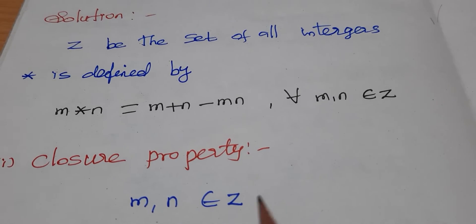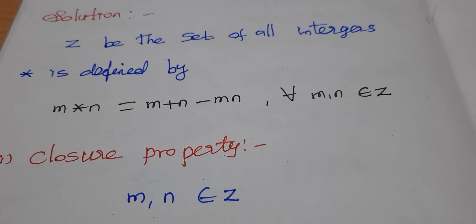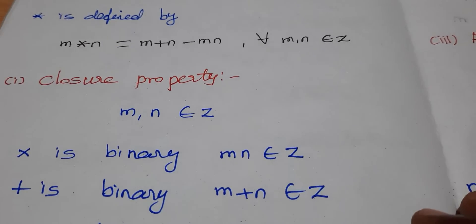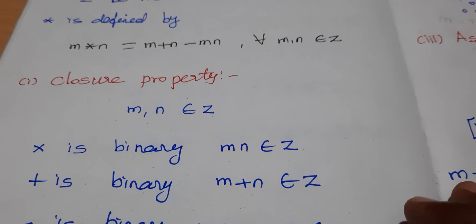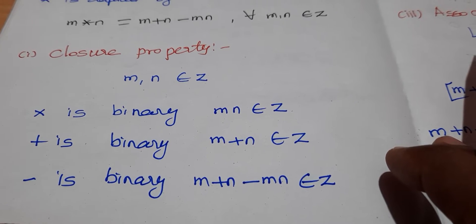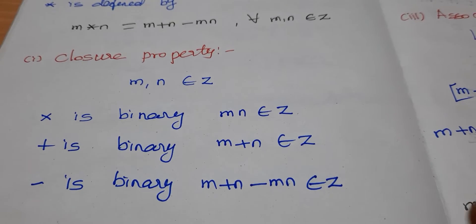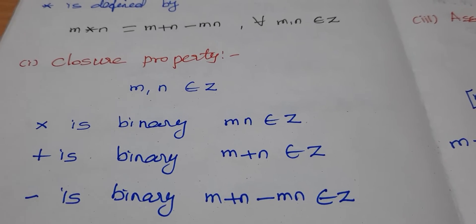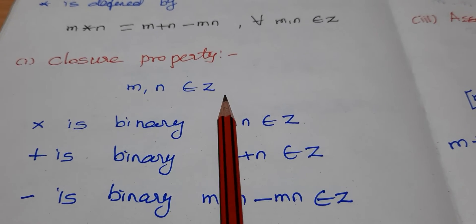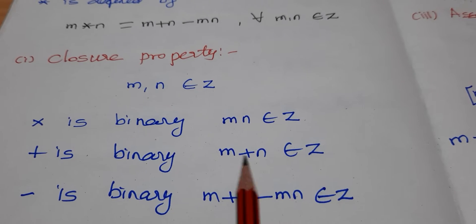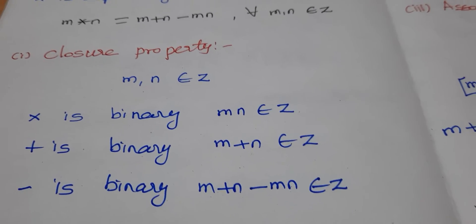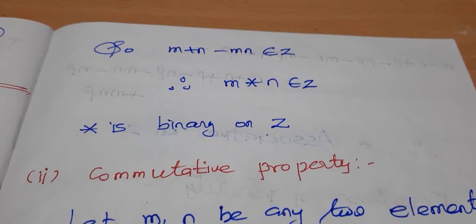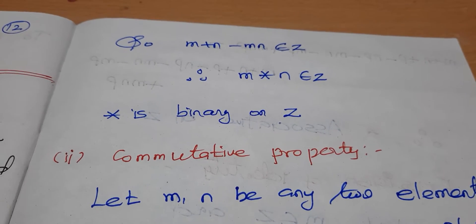Closure property: m, n are integers. Since m and n belong to Z, m plus n belongs to Z, and mn belongs to Z. Multiplication is a binary operation, addition is a binary operation, subtraction is a binary operation. Therefore m star n belongs to Z, so the closure property is true.